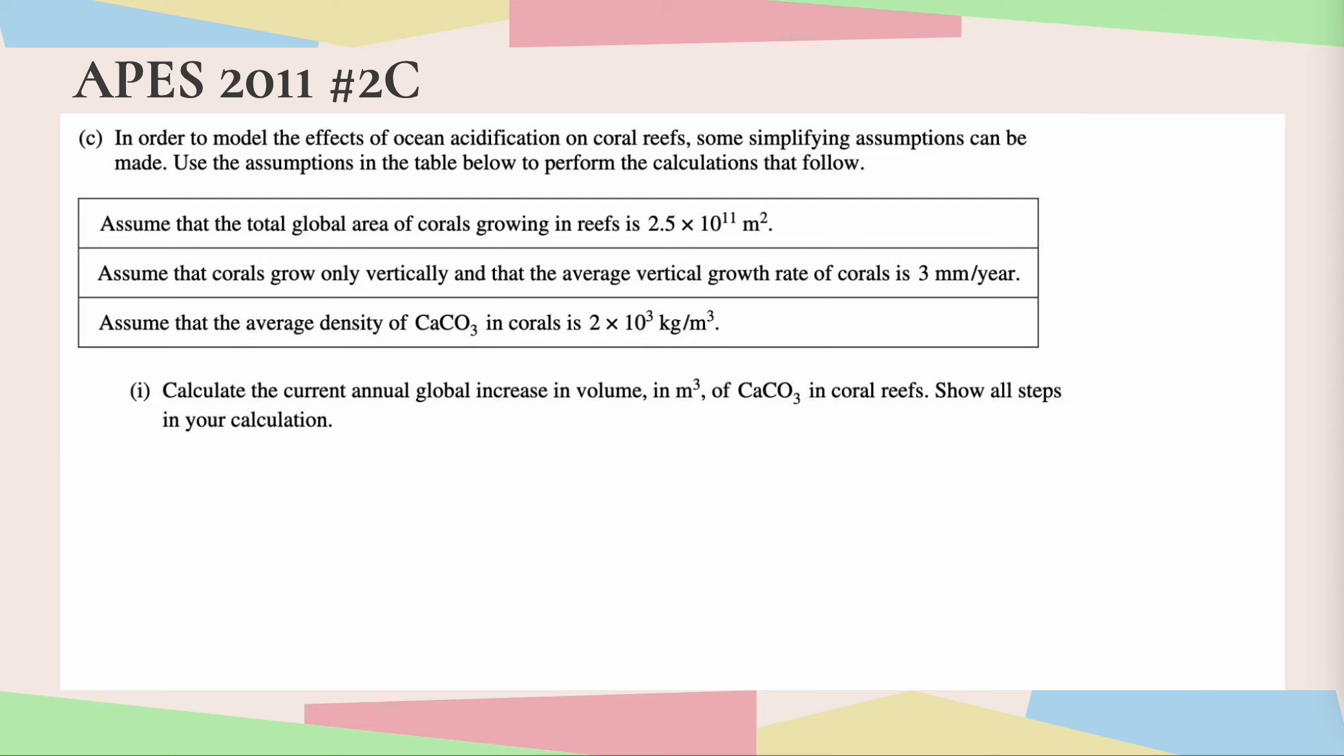Okay, so part one asks us to calculate the current annual global increase in volume in meters cubed of CaCO3 in coral reefs. Show all steps in your calculations. So our givens are of course above, so let's look at what do we know. First of all, we know the global area is 2.5 times 10 to the 11th meters squared. Really pay attention to your units here. These are super important, and we want to get into meters cubed. That's why I'm highlighting that area is, of course, in meters squared.